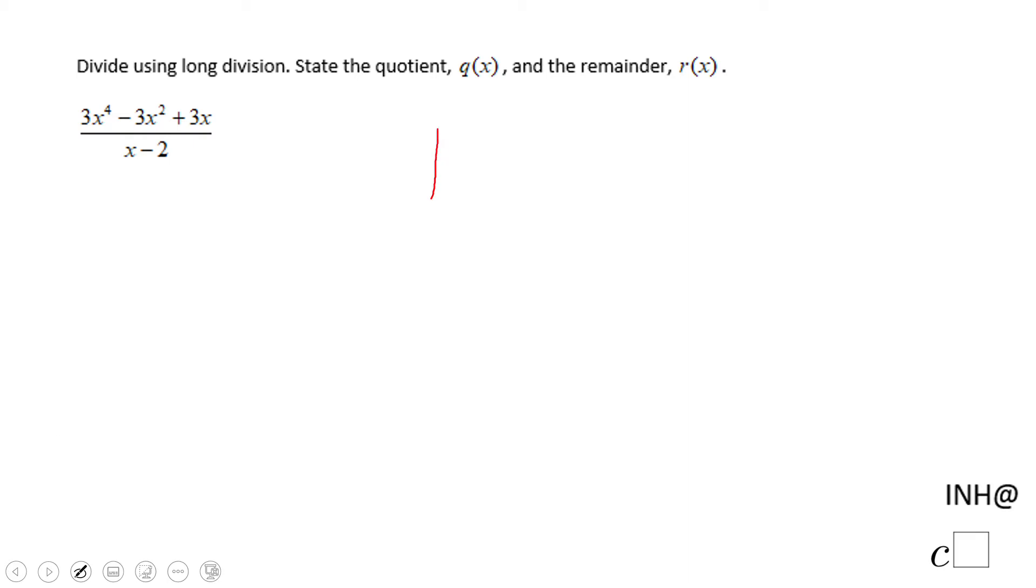Let's do that here. We have 3x to the 4th power, and be careful here, you need to put a 0x³—you have a missing term there, the x³, the third degree—minus 3x², plus 3x. And the same, you do not have any term without x, so you're going to put a plus 0. Very important to do that.